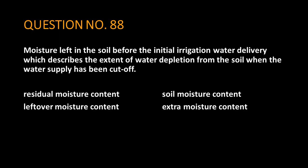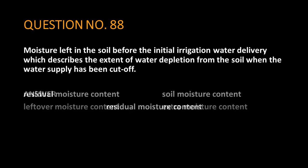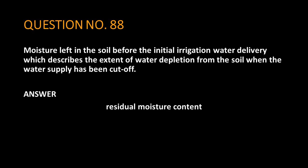Question No. 88. Moisture left in the soil before the initial irrigation water delivery which describes the extent of water depletion from the soil when the water supply has been cut off. The answer is residual moisture content.